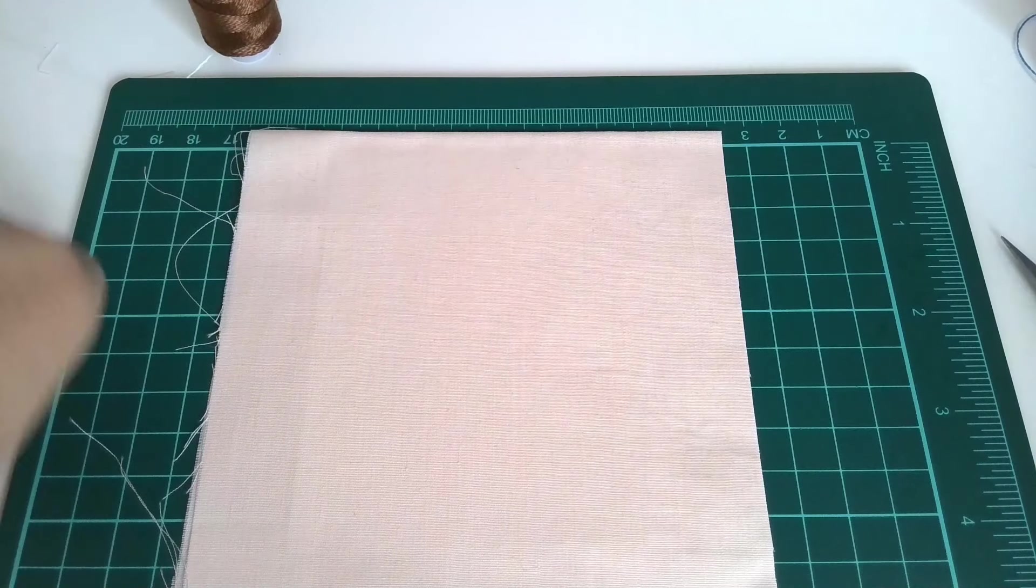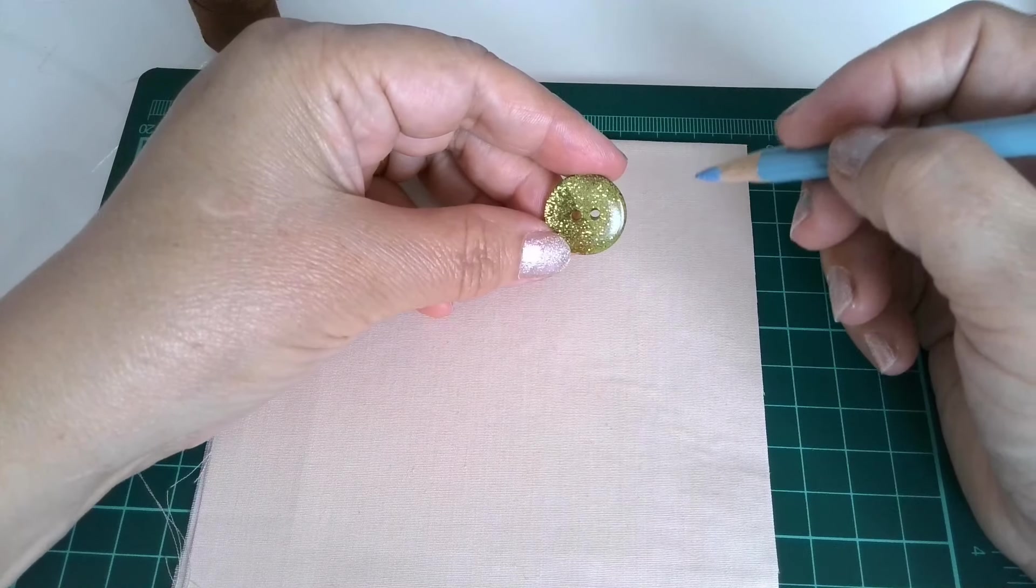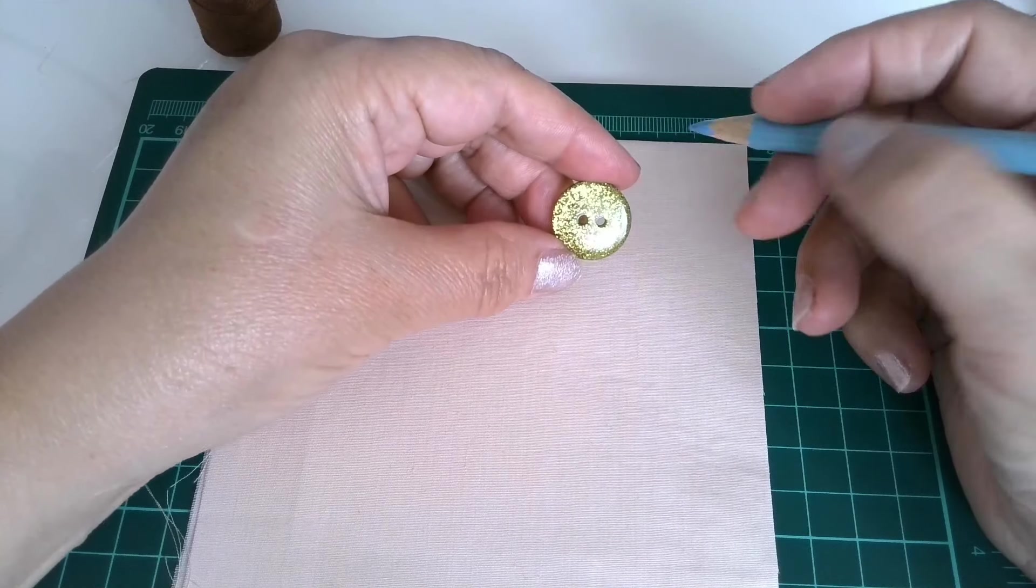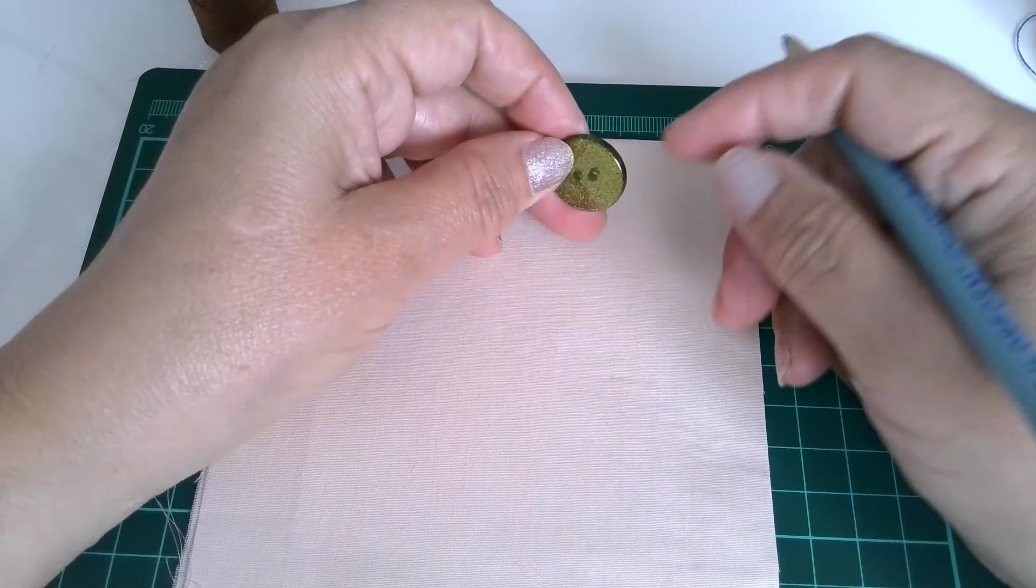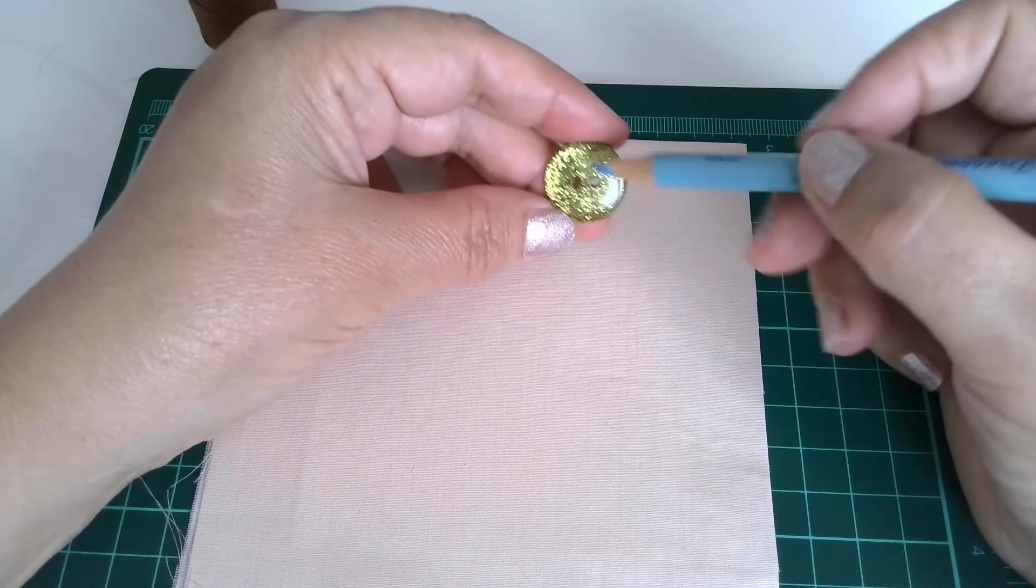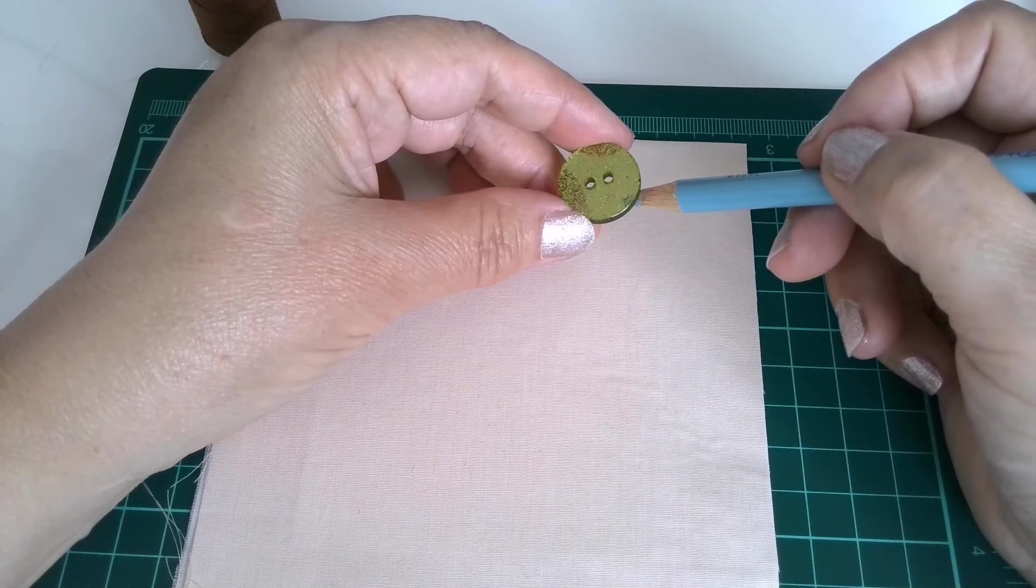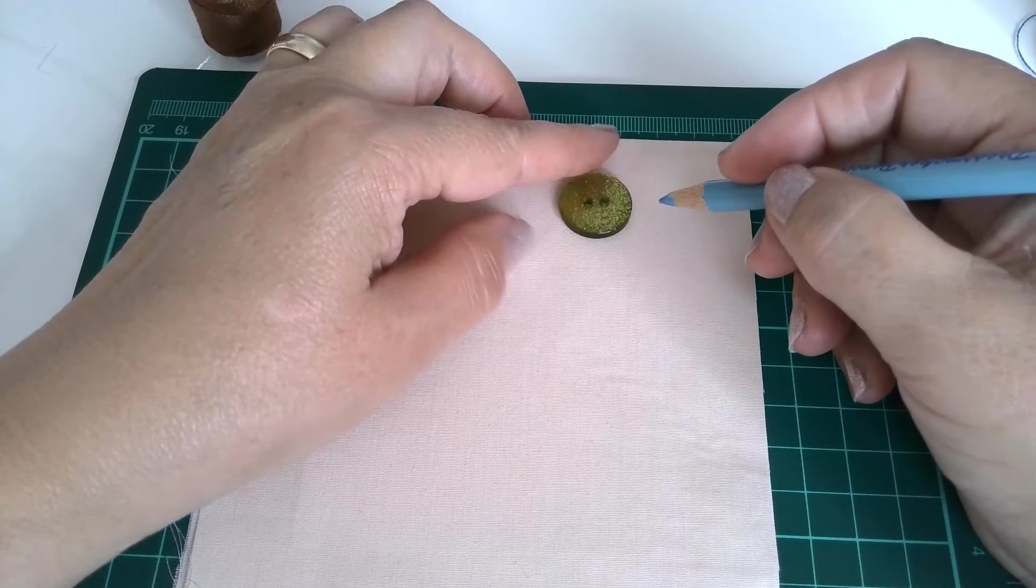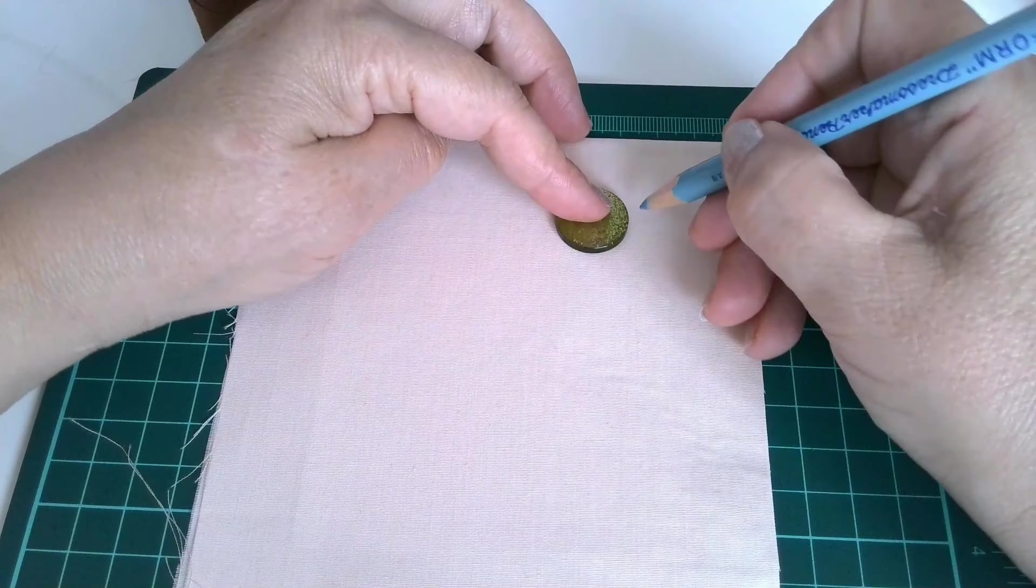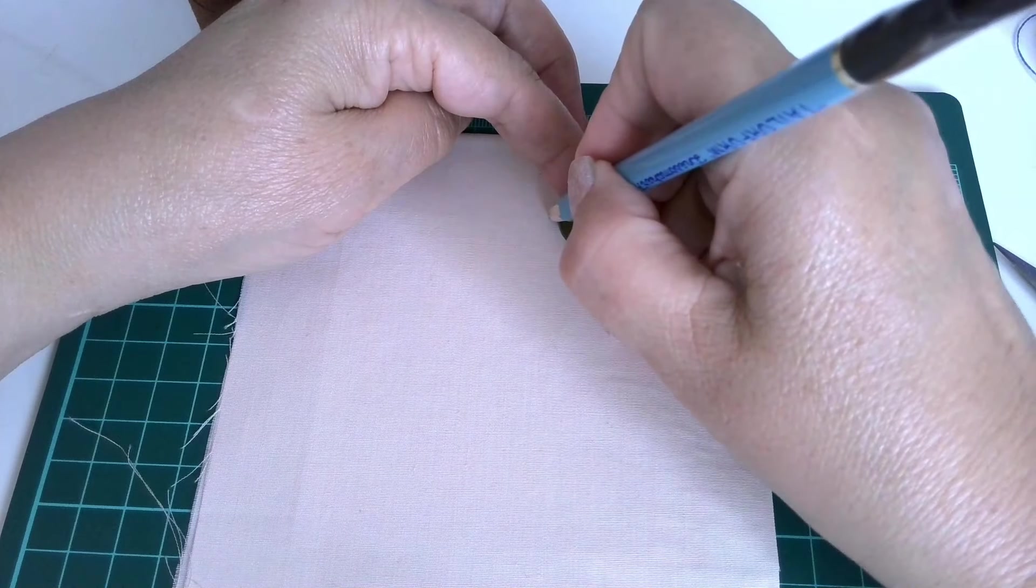Now I take my button and mark the length of the buttonhole. The length of the buttonhole has to be a little bit bigger than the diameter of the button, like one eighth of an inch, or a few millimeters from each side. Here and here.